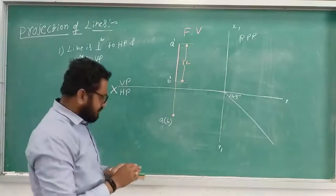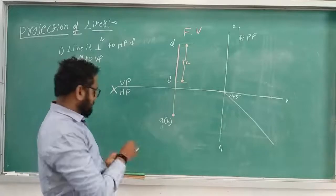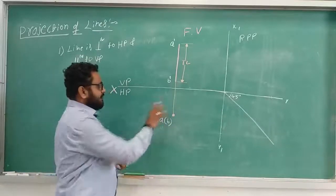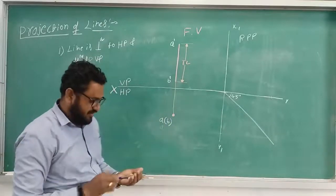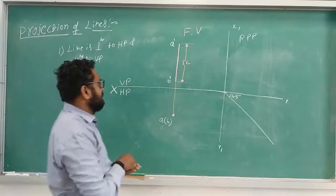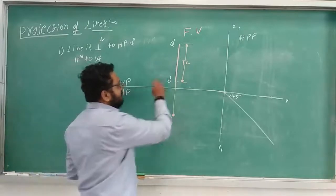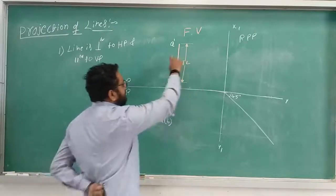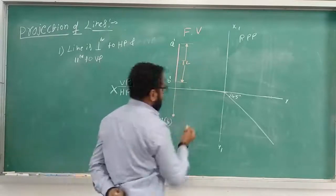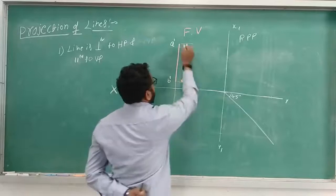In the front view we get the true length, and in the top view this looks like a dot. Now for the side view, we will draw projections from both the front view and the top view to get the side view.